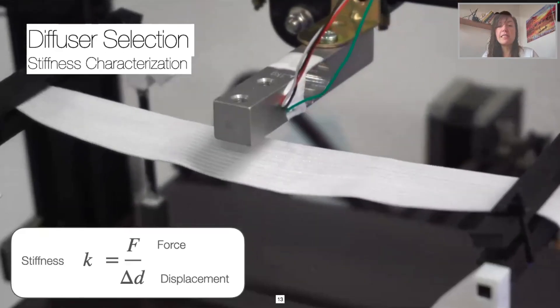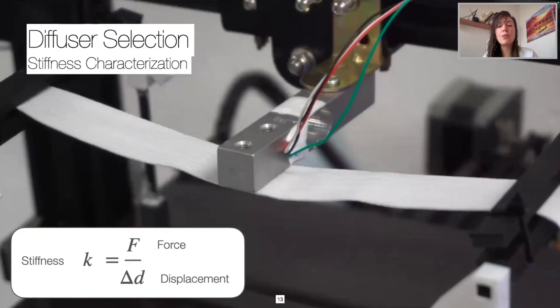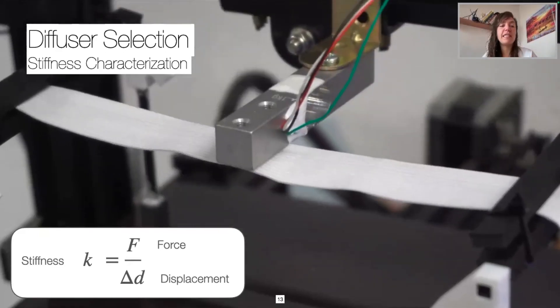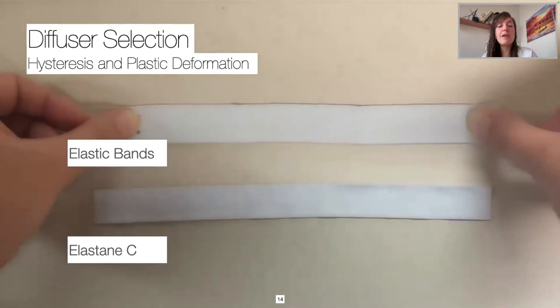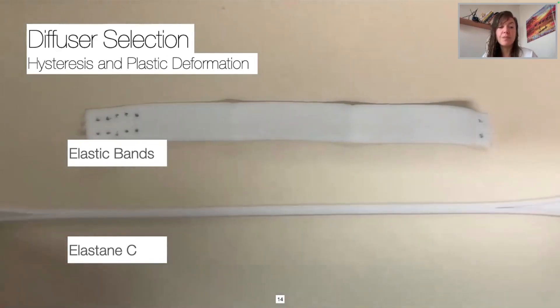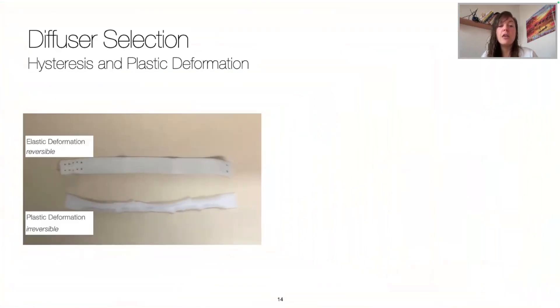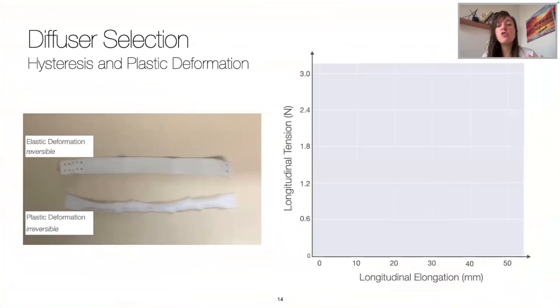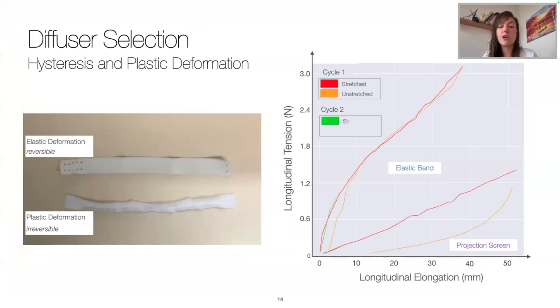First, we experimentally characterized the sample stiffness using a load cell attached to a 3D printer. But as some samples got fatigued, we then characterized their hysteresis and whether they suffer plastic deformation, whether the deformation is reversible or not, as per the elasticity here. Therefore, we deform all our samples longitudinally and measure their tension twice. For clarity purposes, we only display here the elastic bands and classic projection screen. So we can see that the deformation is almost linear when being stretched. However, when being relaxed, the projection screen follows another curve. This shows that the elastic band does not suffer from hysteresis nor plastic deformation, while the projection screen actually does.